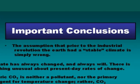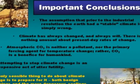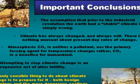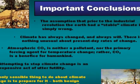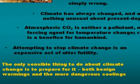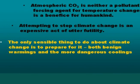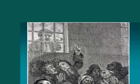Important conclusions: The assumption that prior to the Industrial Revolution the Earth had a stable climate is simply wrong — climate has always changed and always will. There is absolutely nothing unusual about present-day rates or magnitude of climate change. Atmospheric carbon dioxide is neither a pollutant nor a primary forcing agent for temperature change; rather, carbon dioxide is a benefit for humankind. Attempting to stop climate change is an expensive act of utter futility. The only sensible thing to do is to prepare for climate change in both directions — both for the beneficial warmings and for the much more dangerous coolings — for both are certain to occur in the future. Thank you.